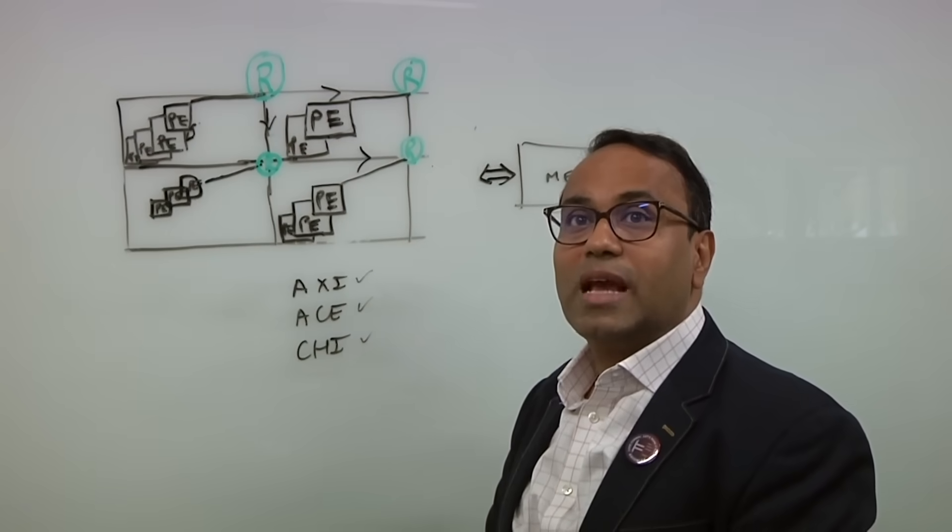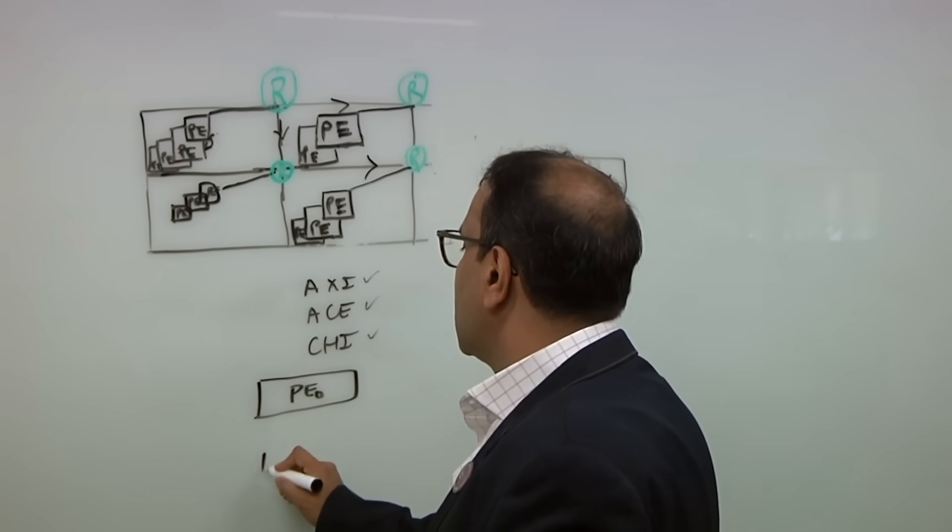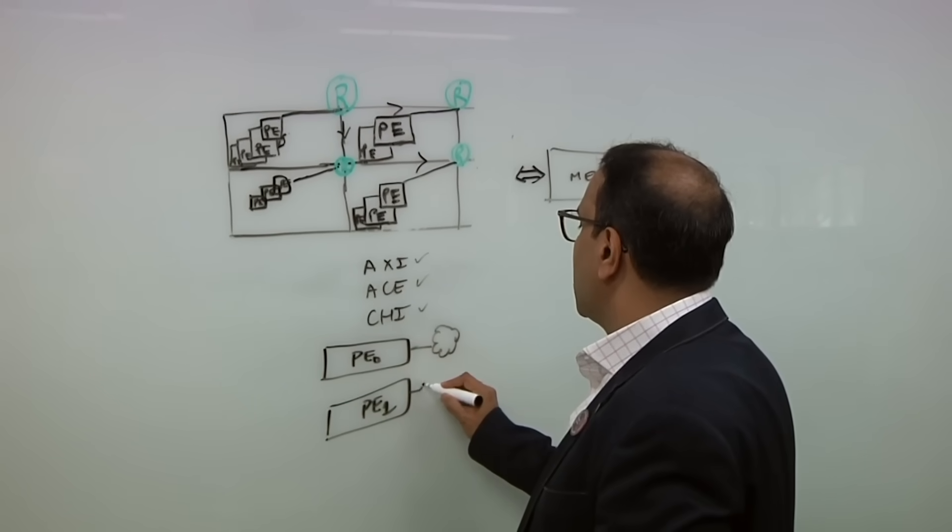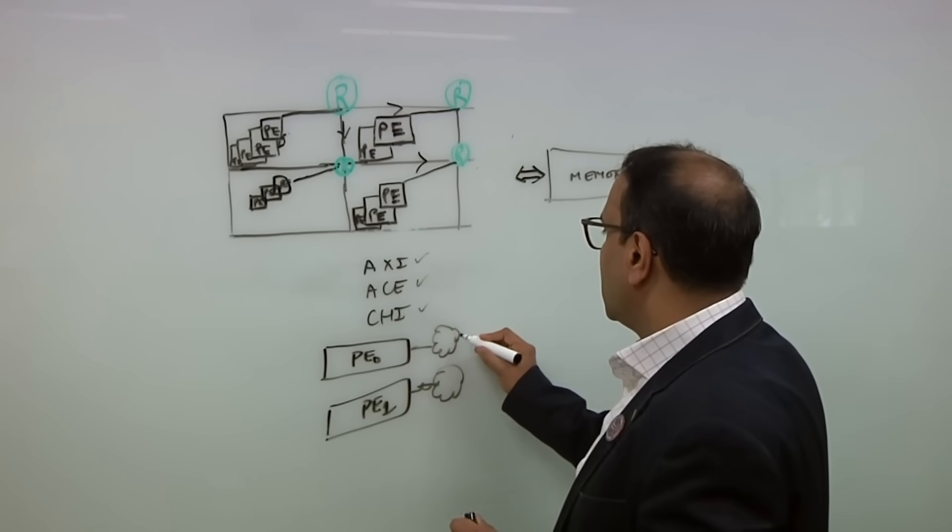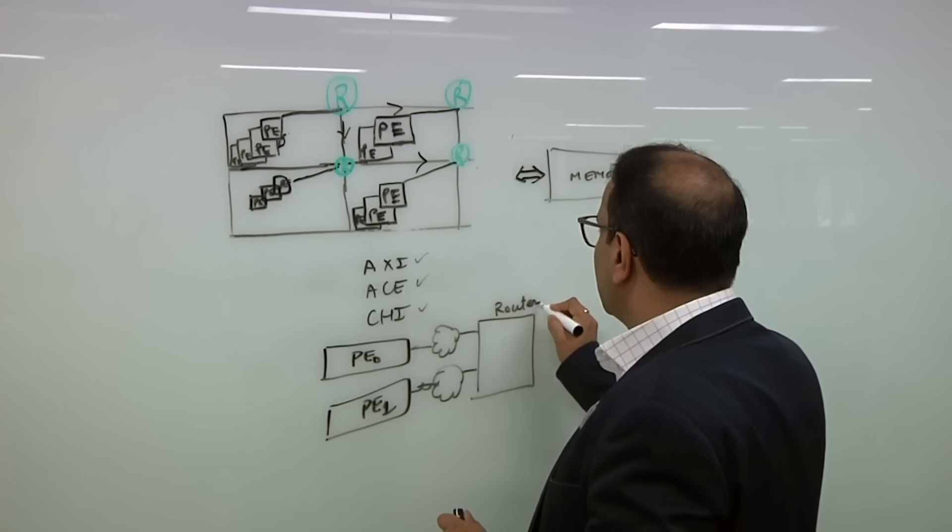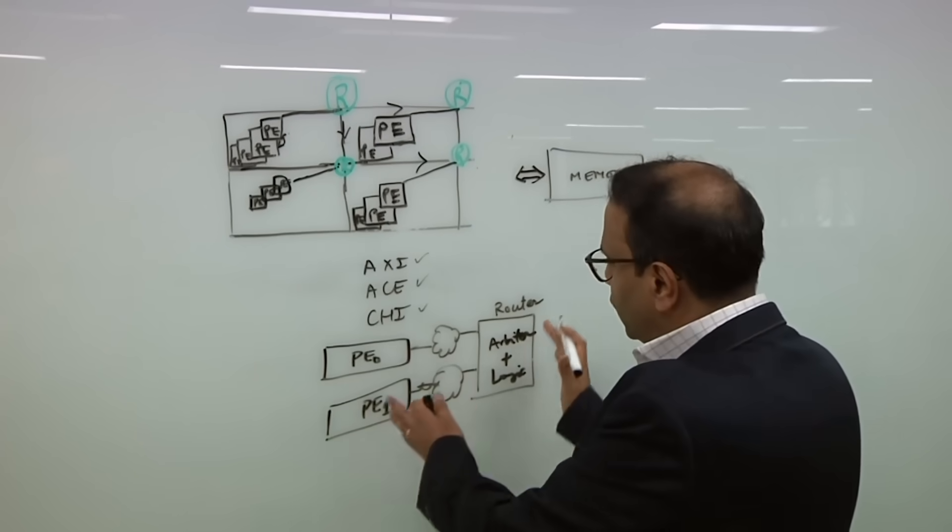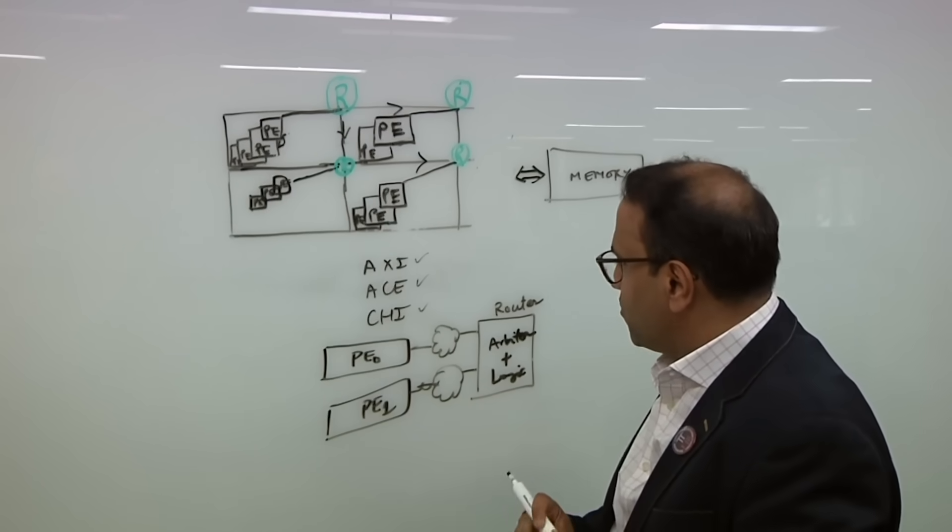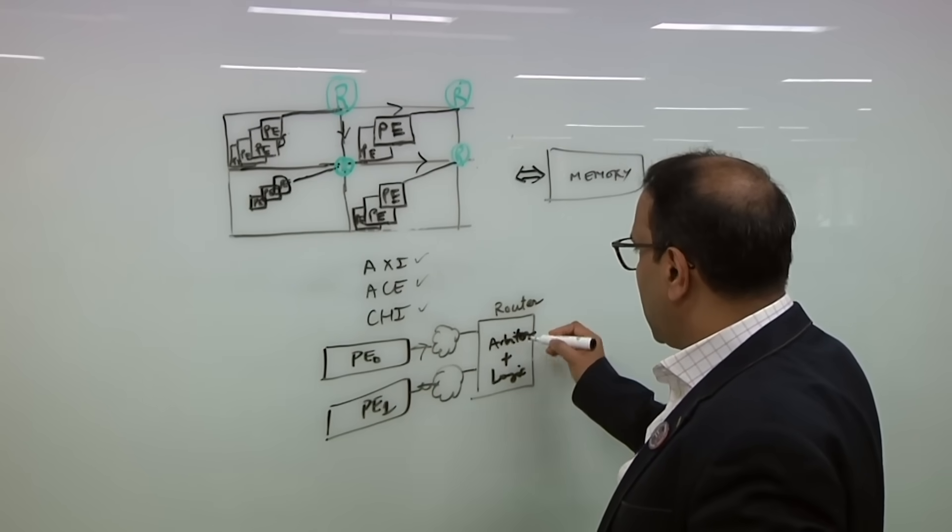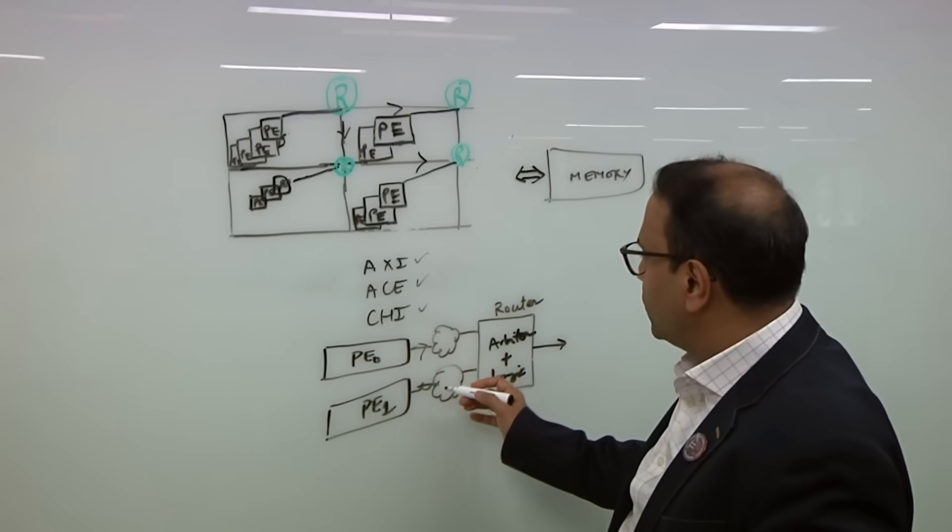Let me draw a simplified version of what's going on in the context of PEs trying to access a router. Imagine you have P0 and P1, and through some cloud of logic—it could be a bus protocol or any other logic—they are trying to access this shared resource. You can call this a router, but within the router you would have an arbiter and some other logic that defines the structure of the router. What we're trying to check is that every message that originates from this PE must make its way to the arbiter and the router, and the router should be able to push it out to the next stage. P1 should also get a chance to access the router.